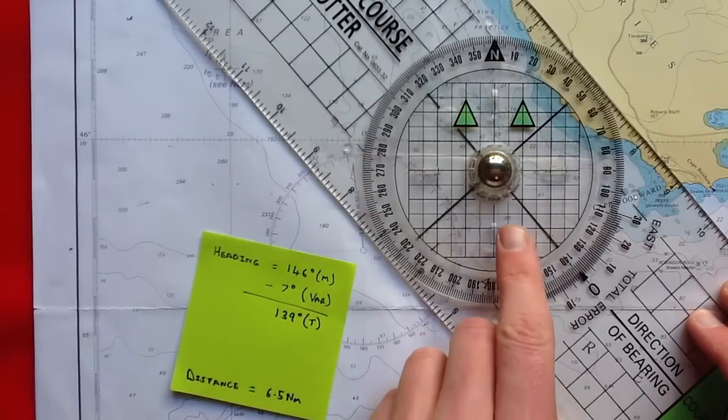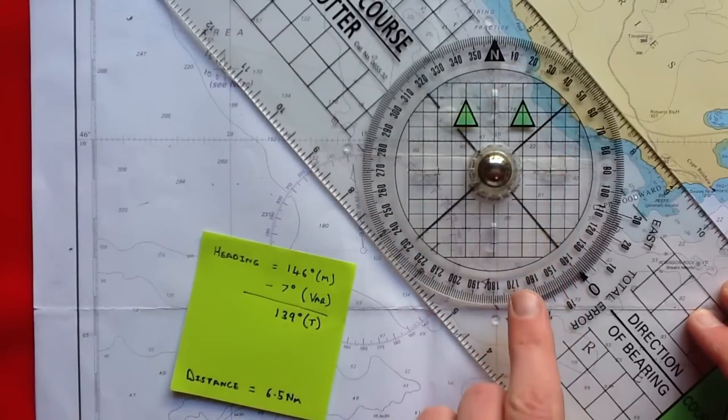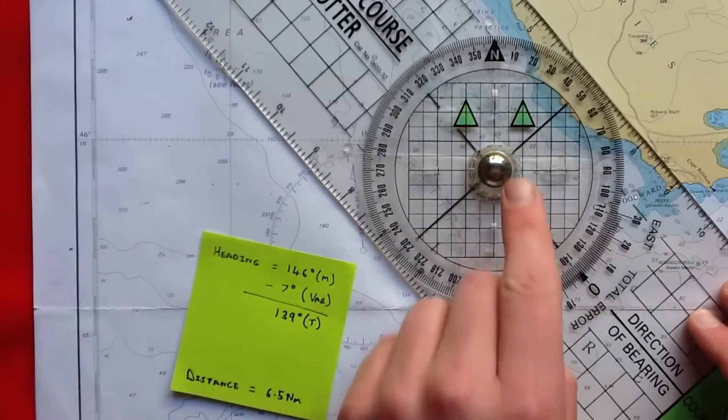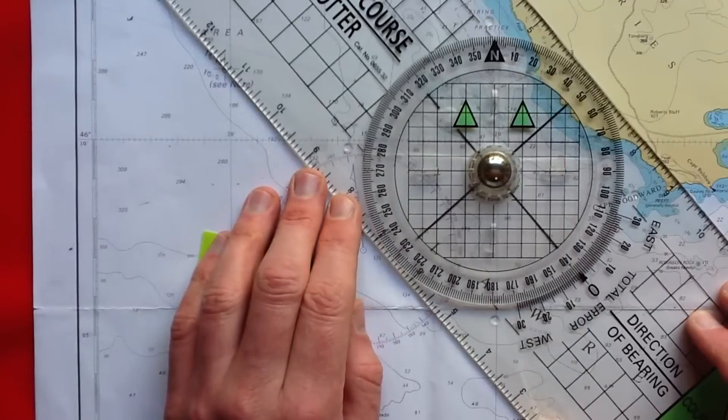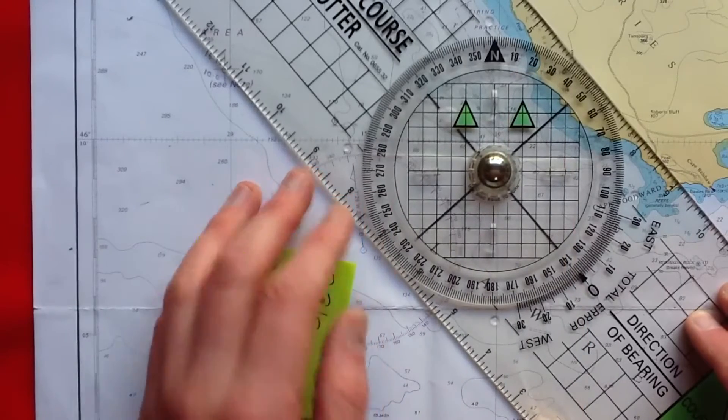And more precisely, that the lines running through this bezel in the direction of those arrows line up with the north arrows on the chart. Like so.